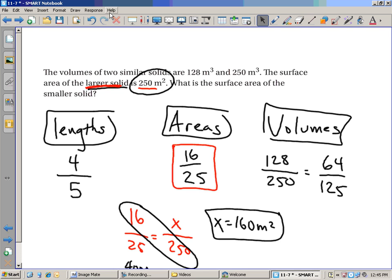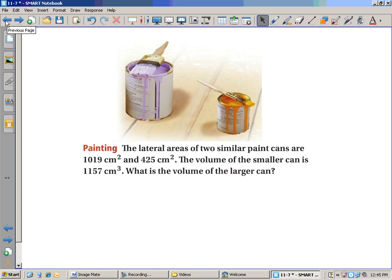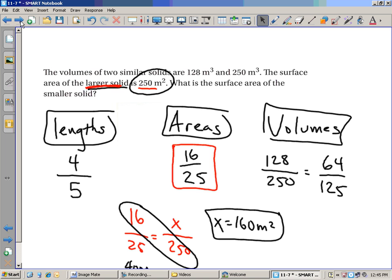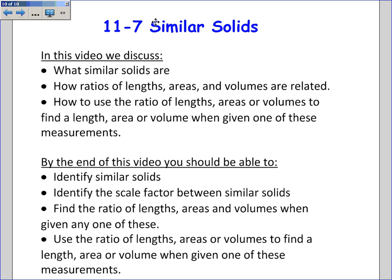We could do this one about the paint. The numbers get pretty messy. And just for the sake of clarity and time, I'm not going to worry about doing this one. This video was about similar solids, what they are, how the ratios of lengths, areas, and volumes are related. How you use one to find the others by either squaring or cubing or cube rooting or square rooting. How to use the ratios to find other lengths, areas, or volumes.